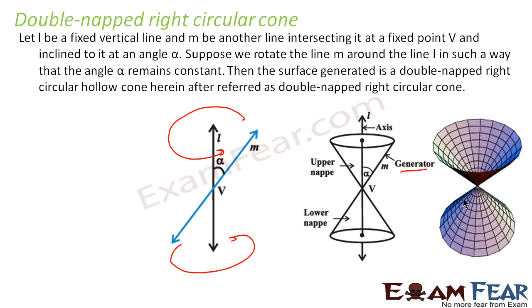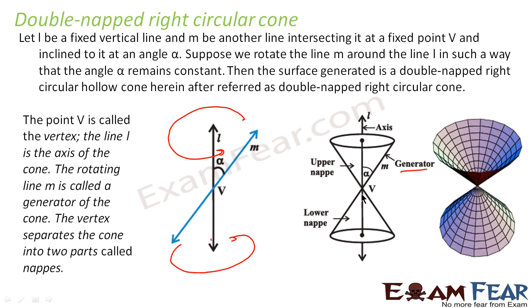Here is a 3D view of the double nappe right circular cone. In the 3D view, the axis is virtual and not directly visible. The generator line M is visible, the upper part is the upper nappe, and the lower part is the lower nappe. The point V where the two nappes meet is called the vertex.